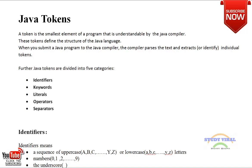Hello friends, welcome to my another video tutorial of Java. In this video tutorial I am going to tell you about some important factors of Java. The main thing is related to Java tokens. Java token is the basic start of your Java program. Let's see what is a Java token.